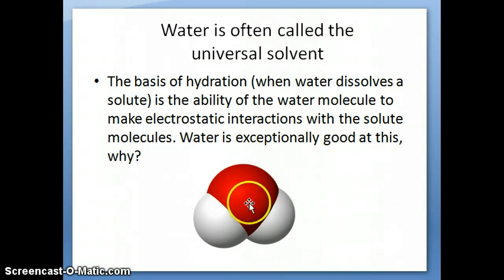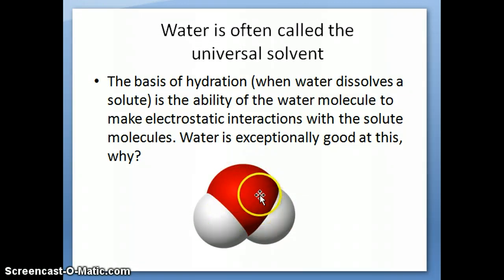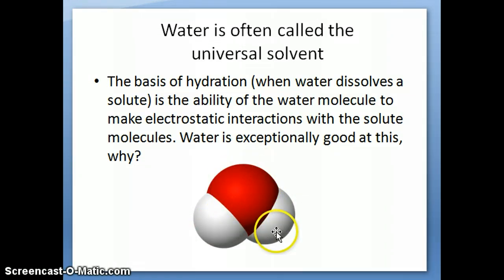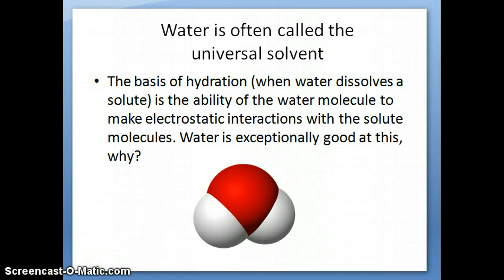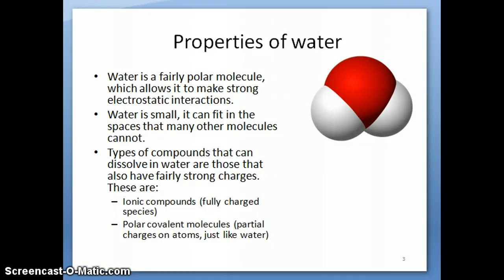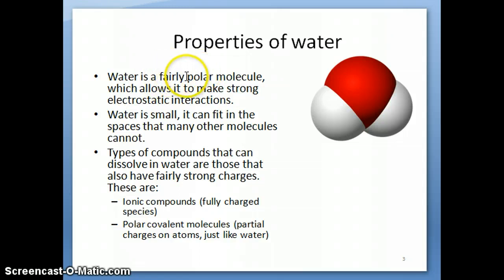To answer that, we start with the structure of water. Water has an oxygen atom—the red one—and two hydrogen atoms—the white ones. We'll discuss why this structure is so good at making electrostatic interactions with other solute molecules. There are two reasons why water is such a good solvent. The first is that water is a polar molecule, and it's a fairly polar one at that.